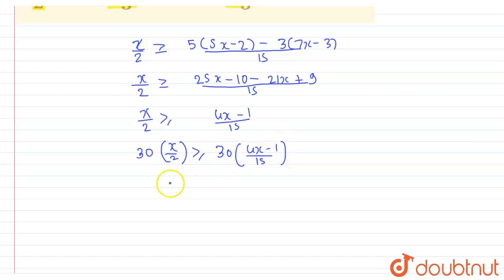So if we further solve this, we will get 15x which is greater than or equal to - this value is 30 divided by 15 is 2, so this is 8x minus 2.